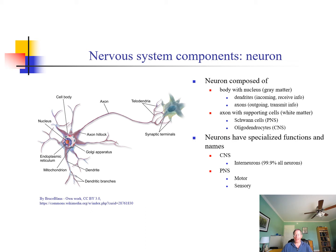The axon will also have an associated glial cell or support cell. These cells will have projections that envelop portions of the axon, causing them to be called white matter. In the central nervous system, these are called oligodendrocytes, and in the peripheral nervous system they are called Schwann cells, but they serve the same purpose. Most neurons in the central nervous system are connections between one neuron and another — they're called interneurons.